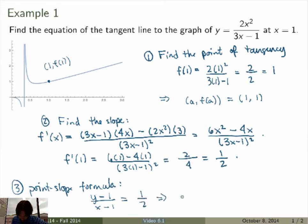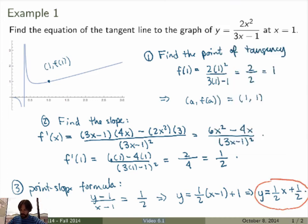So I could rearrange this equation. I can multiply by x minus 1 and get something like this. Then I'm bringing the minus 1 on the other side. And I finally can simplify a little more. 1/2 of x minus 1/2 plus 1, so that's plus 1/2. And that is my final answer for the equation of the tangent line at this point.